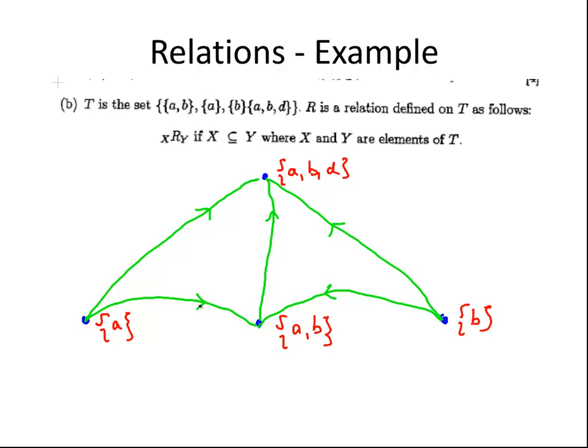Now to finish off, just remember that everything is a subset of itself. So we have one more directed edge pointing back at each vertex. So {a} is a subset of {a}, {a,b} is a subset of {a,b}, {a,b,d} is a subset of {a,b,d}, and {b} is a subset of {b}. Okay, so that's our directed graph, our digraph.